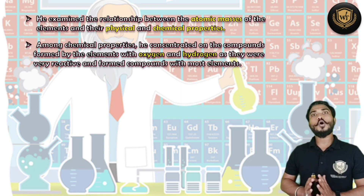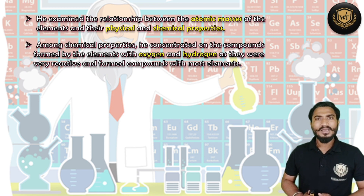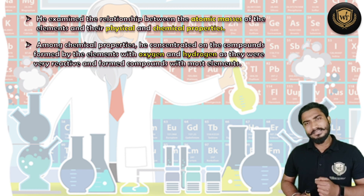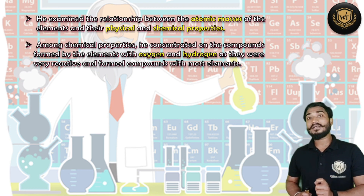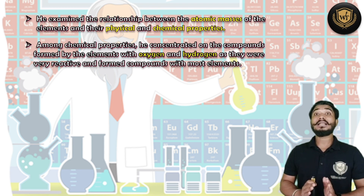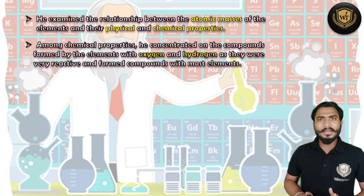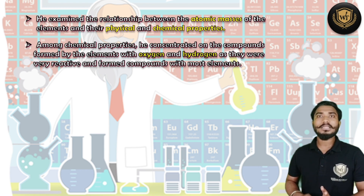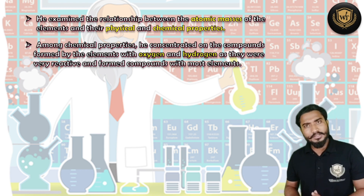When he was studying the chemical properties, he collected all the formulae of oxides and hydrides. The reason he chose oxides and hydrides is because they were available in abundance and they have a property that they can combine with any other element. So all elements were reacted with oxygen and hydrogen, and he collected the formulae of their oxides and hydrides.